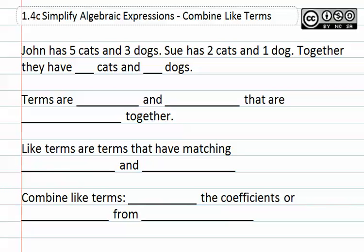John has five cats and three dogs. Sue has two cats and one dog. If we want to combine their like terms, or in this case, their like animals...